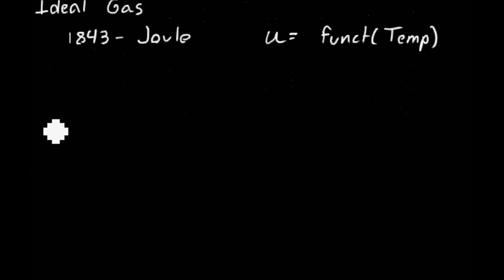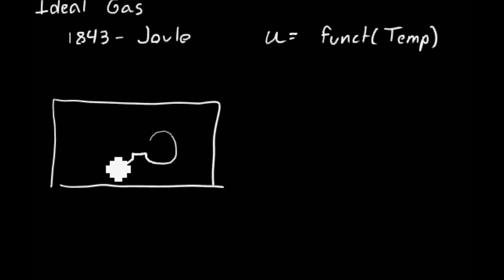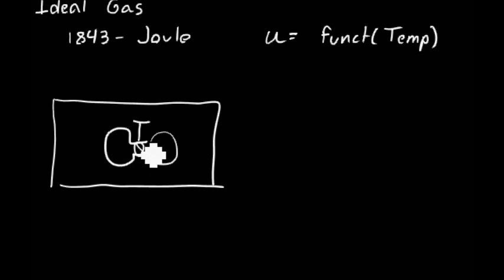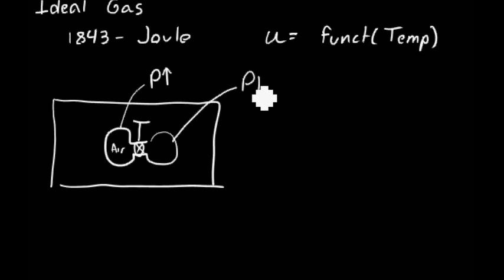What Joule did was he had a big container, and inside of this container he had two chambers that were connected by a valve. He filled up one chamber with air at high pressure, while the other side was at low pressure — essentially evacuated. He then took the temperature of the system.